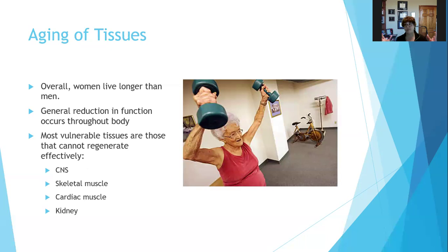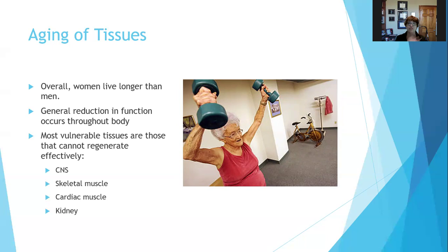Tissues age — that's just the way it is. Tissues heal and tissues age. Overall, in general, women live longer than men statistically in the population. There is a general reduction in function that occurs throughout the body with aging. The most vulnerable tissues are those that cannot regenerate effectively: central nervous system tissues, skeletal muscle, cardiac muscle, and kidneys. A lot of the vulnerable tissues that can't regenerate are more affected by aging than other things.